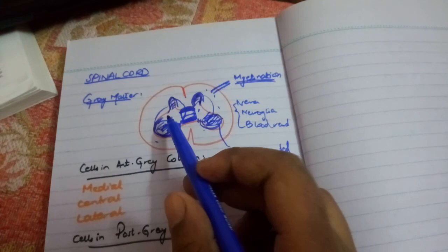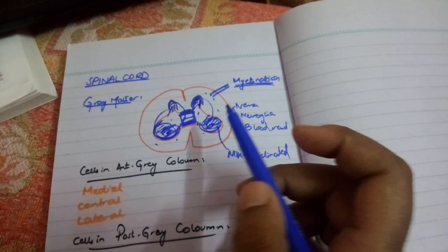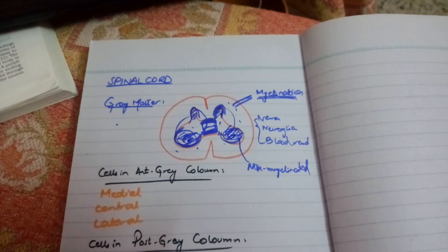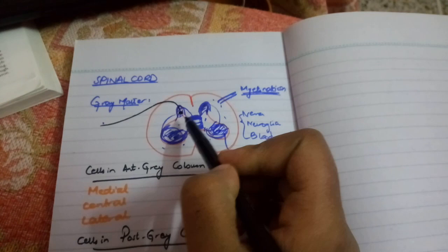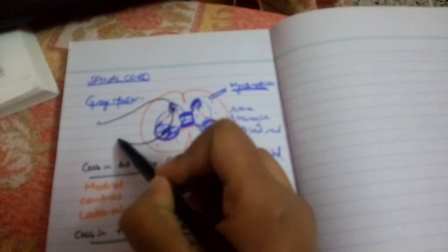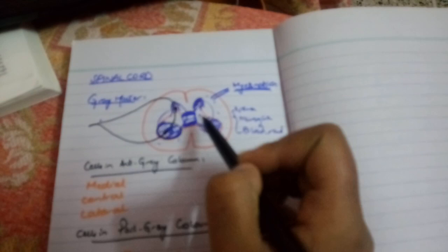The anterior gray column contains motor neurons. The sensory pathway comes in from sensory nerves from any part of the body and enters the posterior gray column, where it synapses with an interneuron. Then it enters the anterior gray column, which contains the motor neurons, and a message is sent to the effectors so that a response is produced. Because the anterior gray column contains motor neurons, all anterior neurons are motor neurons.